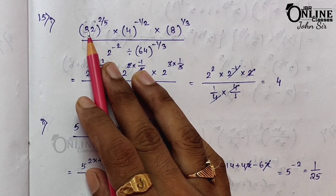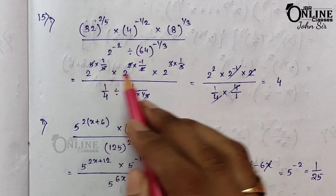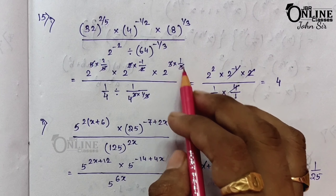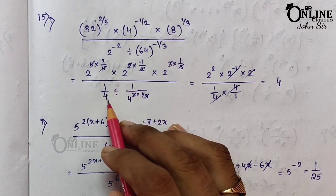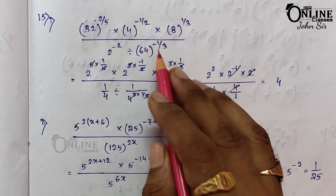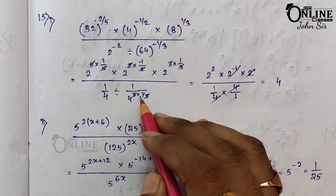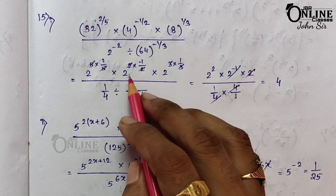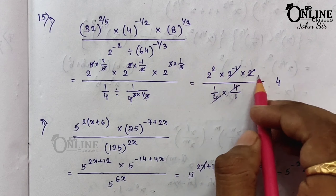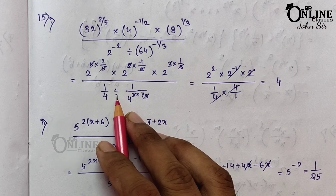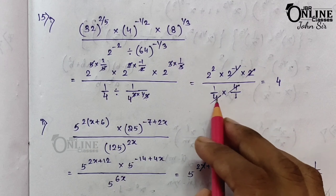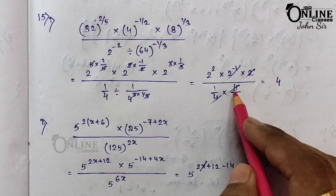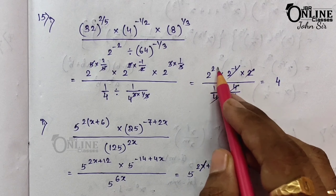Sum 15.1: 32^(2/5) × 4^(−1/2) × 8^(1/3) × 2^(−2) ÷ 64^(−1/3). Here 32 = 2^5 so 32^(2/5) = 2^2; 4 = 2^2 so 4^(−1/2) = 2^(−1); 8 = 2^3 so 8^(1/3) = 2; 2^(−2) = 1/4; 64 = 4^3 so 64^(−1/3) gives 1/4, and 4/4 = 1. Then 2^(−1) × 2 = 1; 1/2 cancels to give 2, so 2^2 = 4.